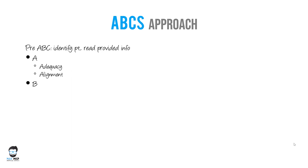A is for adequacy and alignment. The film has to be adequately exposed and should have good alignment. B is for bones — is the bone you asked for present in the x-ray, and is the whole length of the bone included? These are the kinds of things assessed under bones.